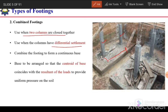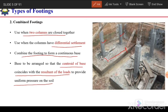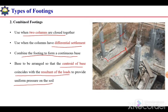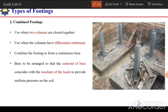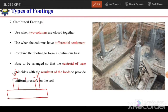The isolated footings for the two columns are combined to form a continuous base, arranged so that the centroid of the base coincides with the resultant of the load to provide uniform pressure on the soil. While designing a combined footing, we decide the area and shape such that the resultant of the load and the centroid of the footing coincide. If the resultant passes through the centroid, the pressure underneath the footing will be uniform.